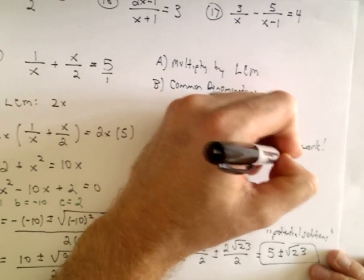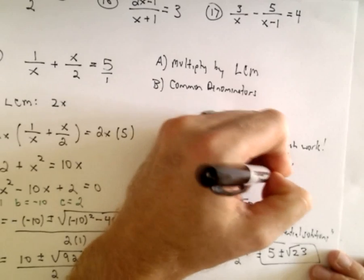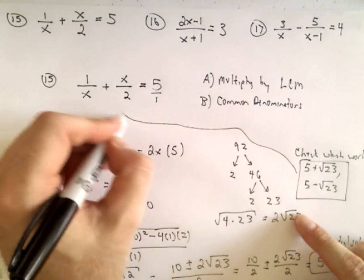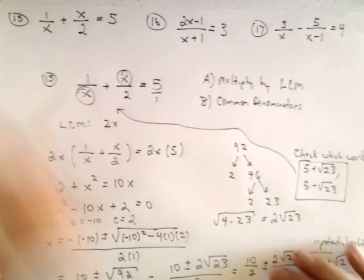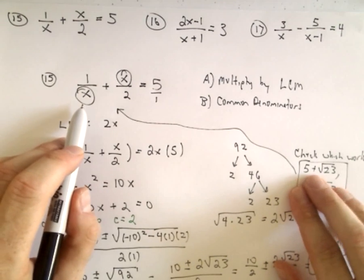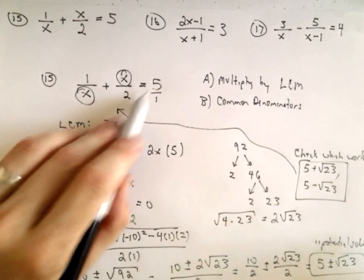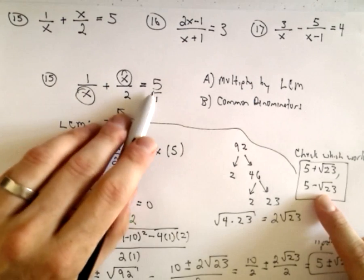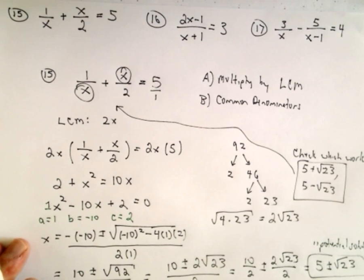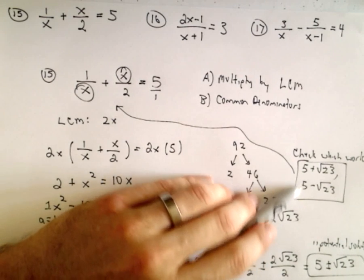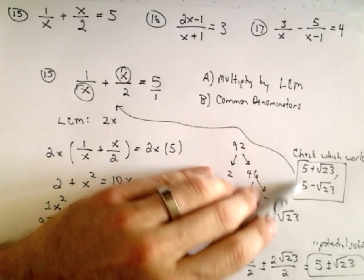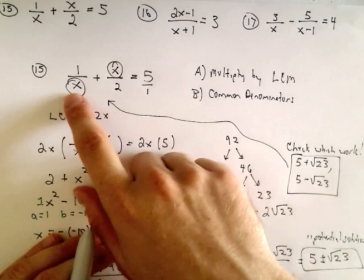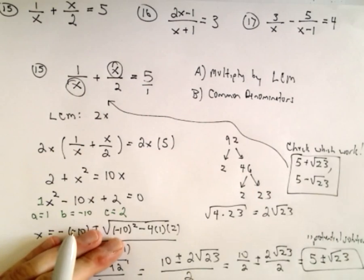I'm going to leave it as homework to you to check which ones work. You've got the solution 5 plus the square root of 23 and 5 minus the square root of 23. What you're going to have to do is substitute them back in for x. 1 over 5 plus the square root of 23, 5 plus the square root of 23 over 2, do the arithmetic and see if you get 5. And try 5 minus the square root of 23 and see if you get 5. That'll be some good practice with fractions. Hopefully in the comment section people will indicate if they both work.